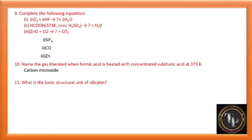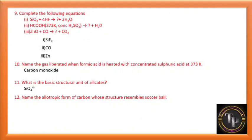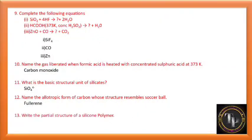What is the basic structural unit of silicates? SiO4⁴⁻ is the basic structural unit. Name the allotropic form of carbon whose structure resembles a soccer ball — the answer is fullerene. The partial structure of silicon polymer is drawn from the NCERT textbook.